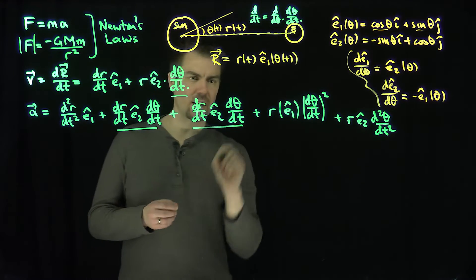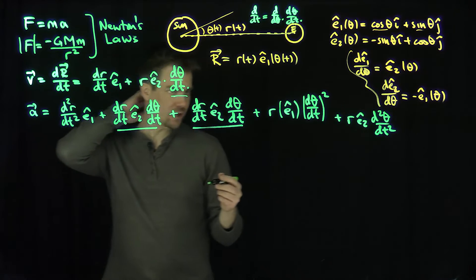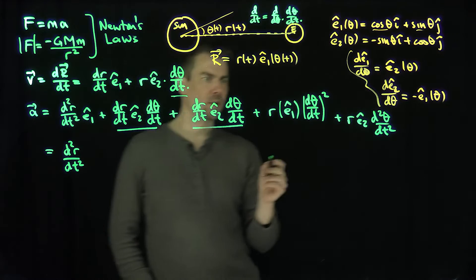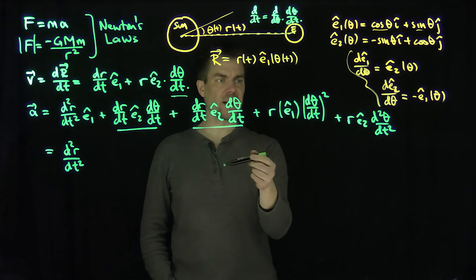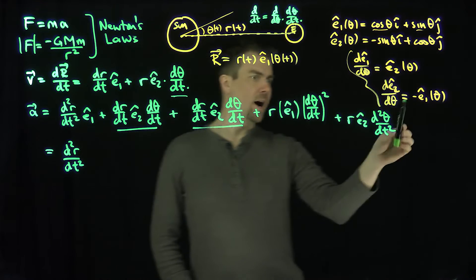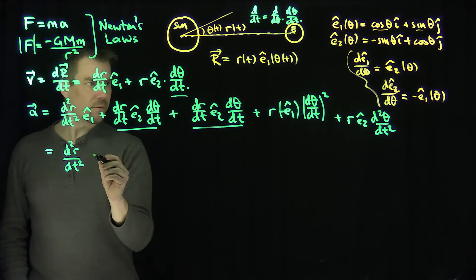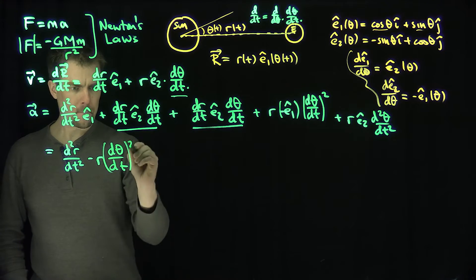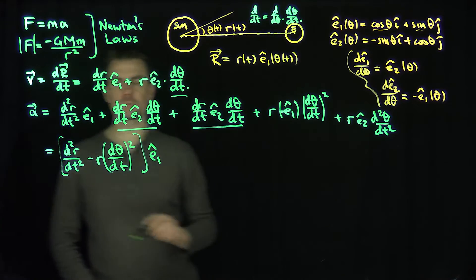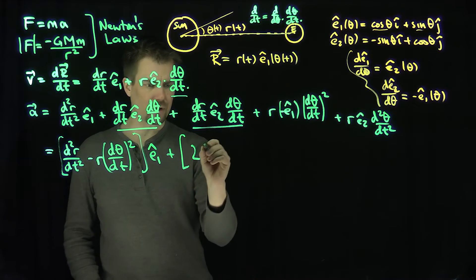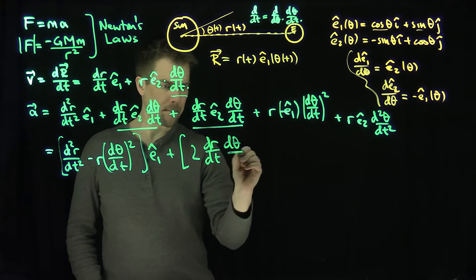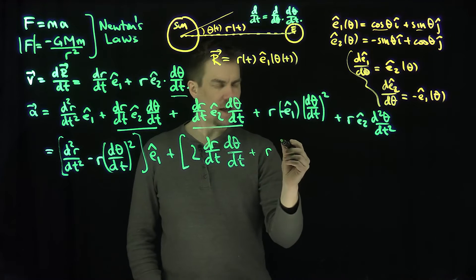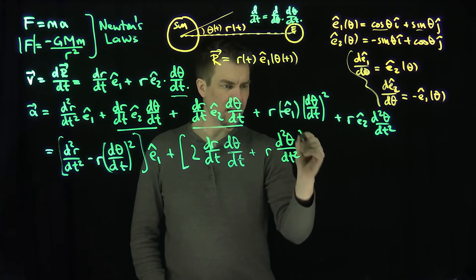Collecting the e1-hat terms: (d²r/dt²) minus r(dθ/dt)². And the e2-hat coefficient combines the two common terms: 2(dr/dt)(dθ/dt), plus r(d²θ/dt²). So the acceleration is [(d²r/dt²) − r(dθ/dt)²] e1-hat + [2(dr/dt)(dθ/dt) + r(d²θ/dt²)] e2-hat.